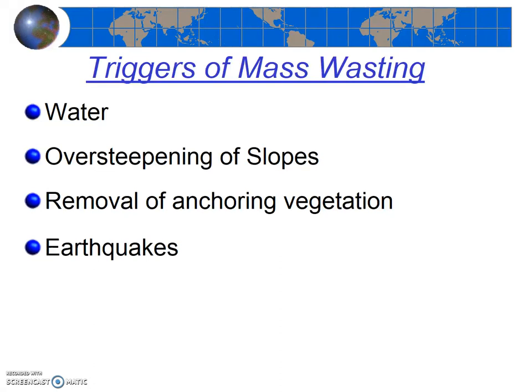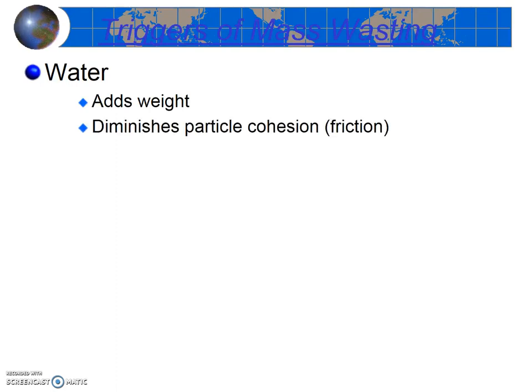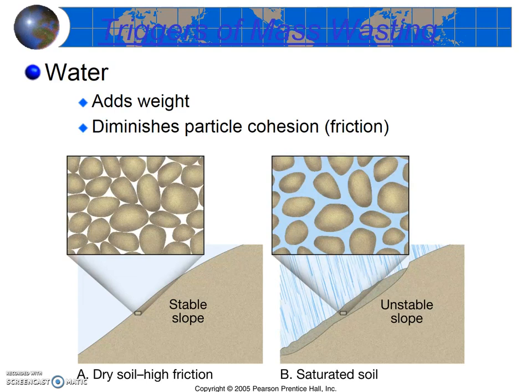I encourage you to get these four triggers into your notes. Water is a very important trigger of mass wasting events. First, water is heavy, so it adds weight. Additionally, water is a lubricant, so it reduces friction. Thus, the gravitational force is increased due to the weight, and the friction force is decreased due to this lubrication. Many, many mass wasting events occur right after or during heavy rain events.